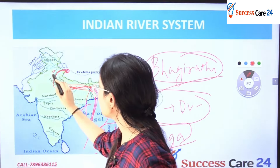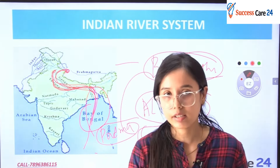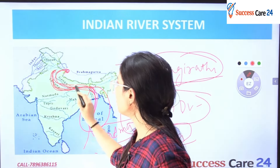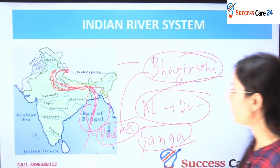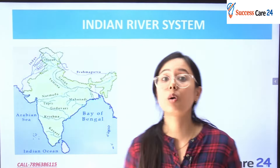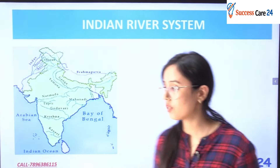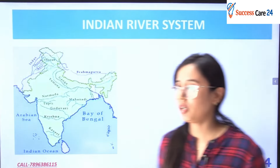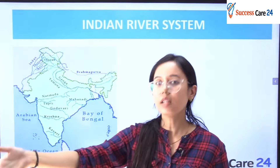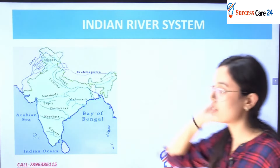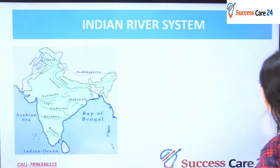Yamuna flows parallel to the Ganga and is its longest tributary. Ganga is the longest river in India, and it also has the largest drainage basin. Since the Indus flows partly through Pakistan, the Ganga is considered the longest river in India. It is also considered a holy river.